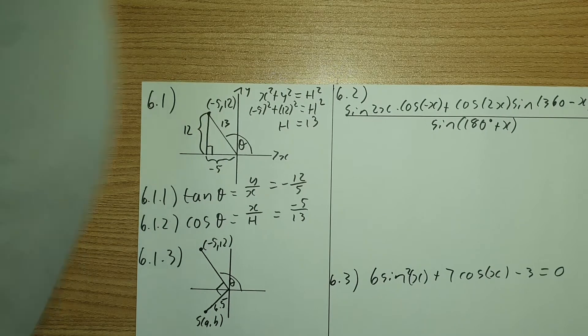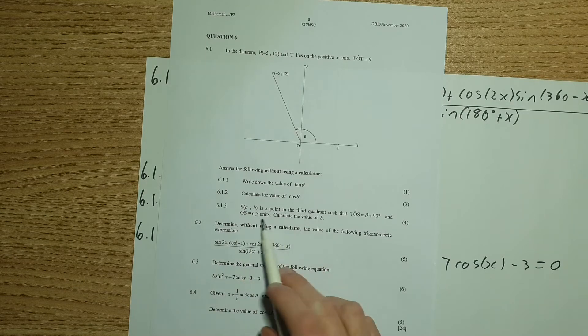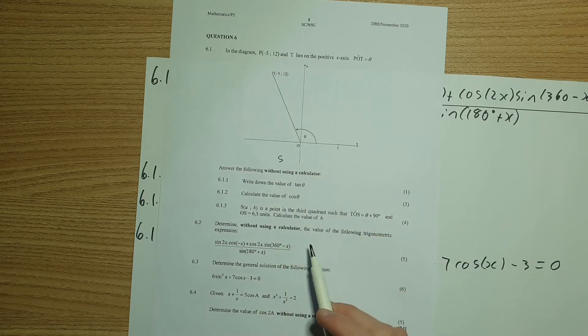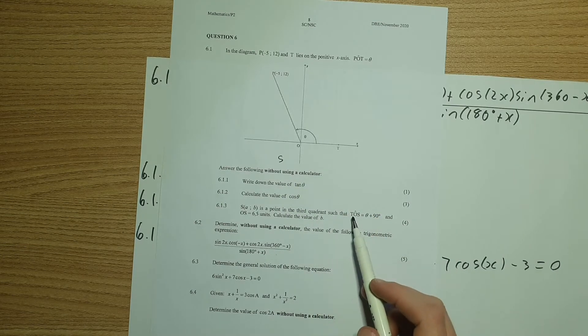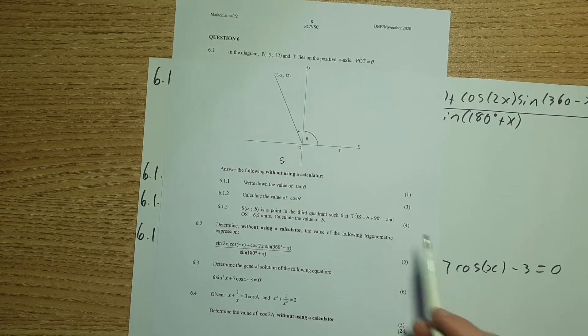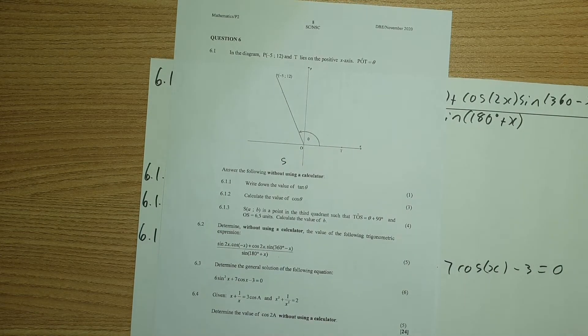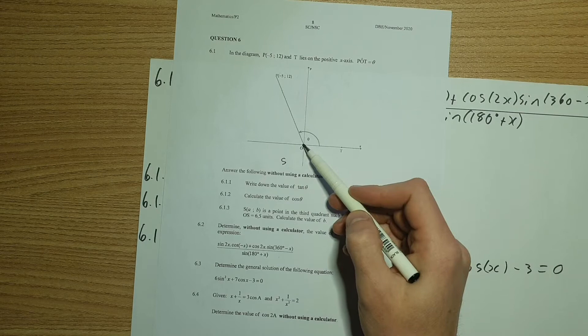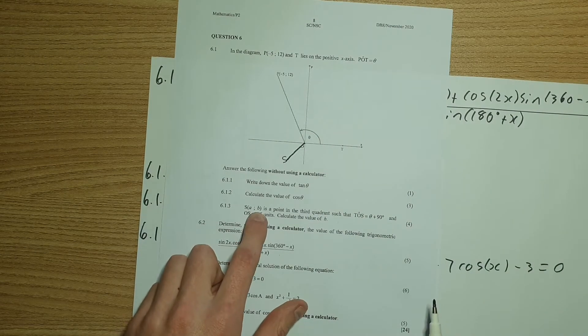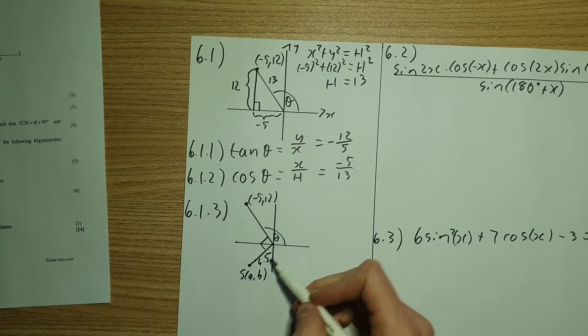The next one's asking for cos. So cos is equal to x over my hypotenuse, which is then going to be negative 5 over 13. Now 6.3 is an interesting one. It says S, which has the coordinates AB, is a point in the third quadrant, such that TOS equals theta plus 90 degrees, and OS equals to 6.5 units.